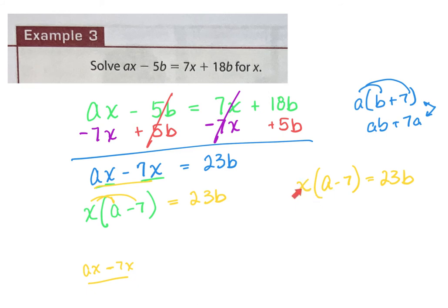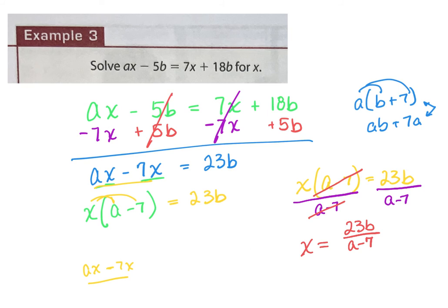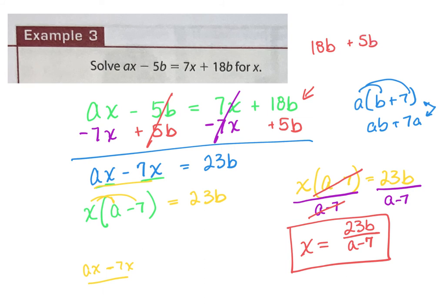Since it's multiplication, I can divide by the entire group. The entire group will cancel out, and I'll have just X on the left and 23B over (A minus 7) on the right. This is what you do when you have multiple variables and you're trying to get one by itself — use distribution to pull it out, which is technically what you're doing when you add like terms: B times 18 plus B times 5 is just B times 23. Same principle: take the X out, divide that group over to get X by itself.